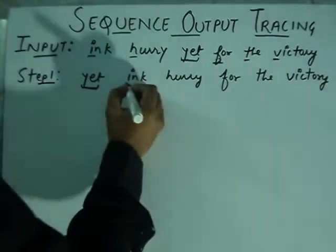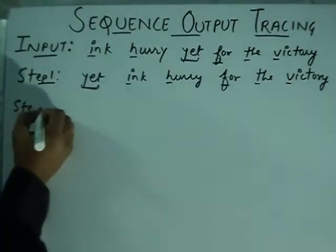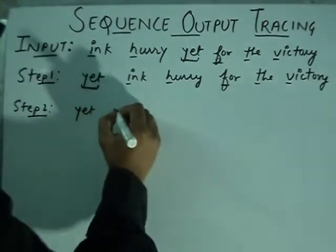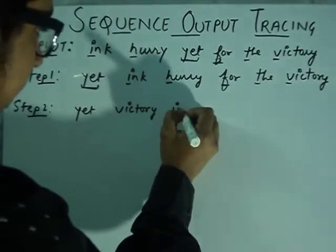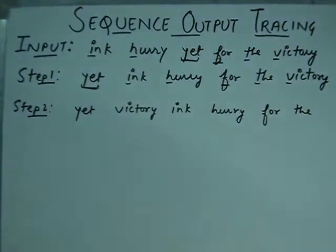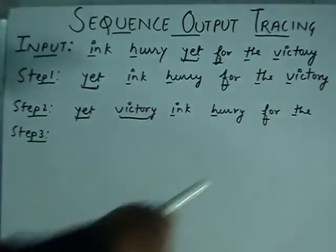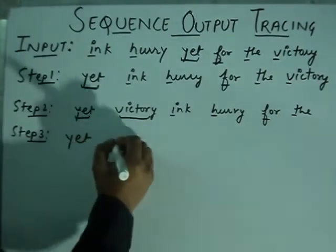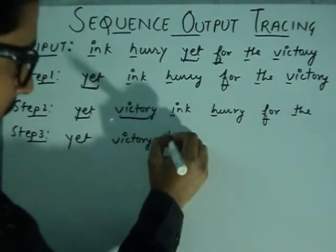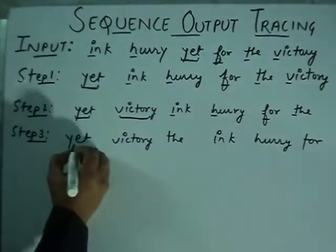So first place is booked. Now we have to check the other words' first alphabets. According to alphabetical order, V comes later, so step two is: 'yet, victory, ink, hurry, for.' Now two places are booked and we have four remaining. Step three: we analyze the first alphabet of the remaining four words, and T is the alphabet which comes later according to alphabetical order. So we place: 'yet, victory, thee, ink, hurry, for.' Three places are booked.